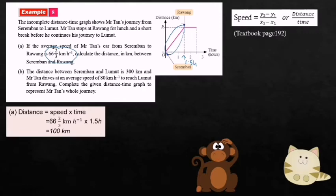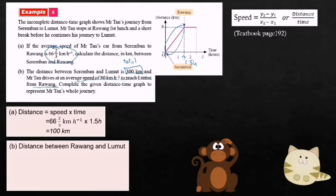Part B: The distance between Seremban and Lumut is 300 km, and Mr. Tan drives at an average speed of 80 km per hour to reach Lumut from Rawang. From the question, total distance is 300 km, and the average speed from Lumut to Rawang is 80 km per hour.